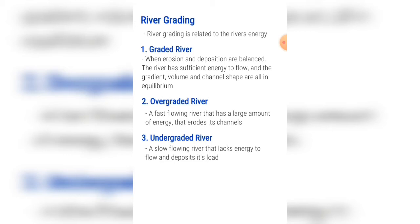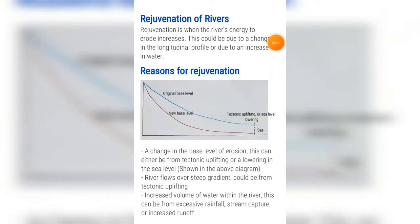A way to remember the difference is that an overgraded river has over the normal amount of energy, and an undergraded river has under the normal amount of energy. Rejuvenation is when the river's energy to erode increases. This could be due to a change in the longitudinal profile or due to an increase in the amount of water inside the river.